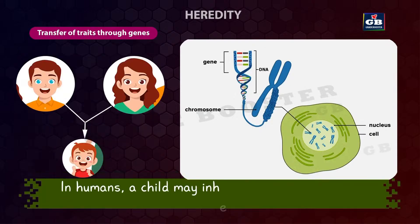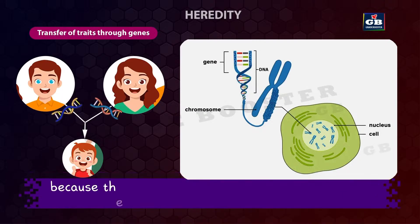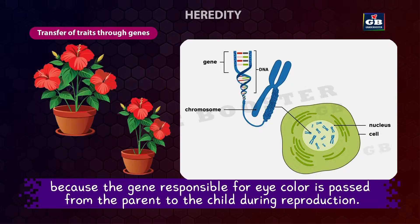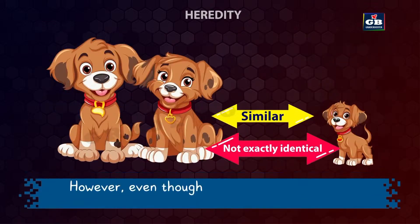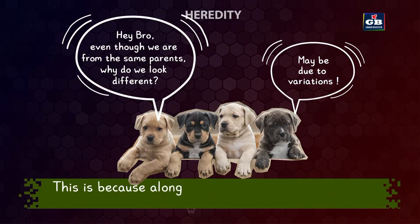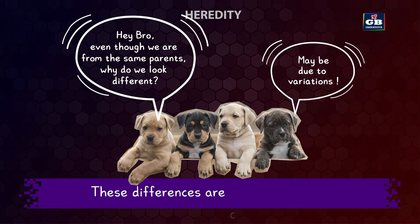For example, in humans, a child may inherit the same eye color as one of their parents because the gene responsible for eye color is passed from the parent to the child during reproduction. Similarly, a plant may inherit a specific flower color or leaf shape from its parent plant. However, even though offsprings inherit traits, they are not exact copies of their parents. This is because along with the inheritance of traits, certain differences also arise. These differences are called variations.